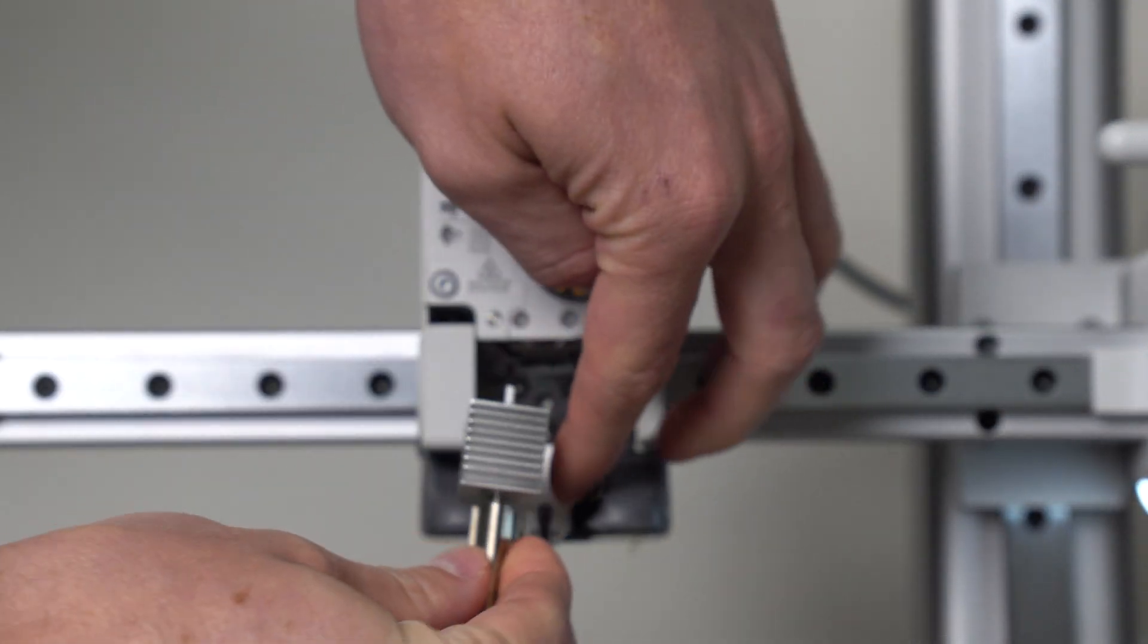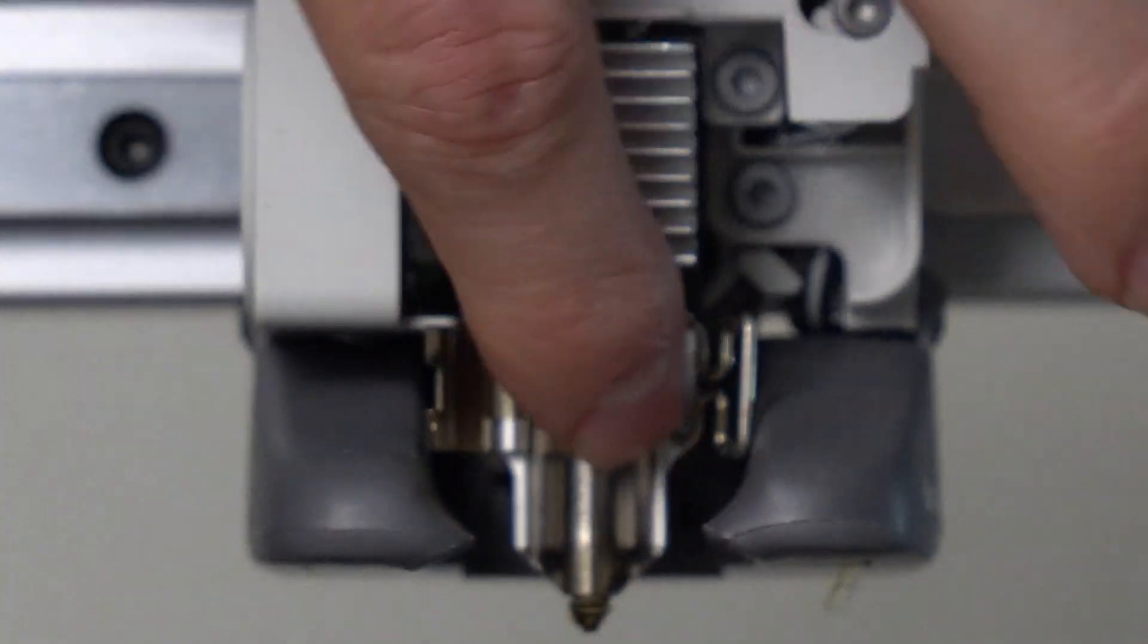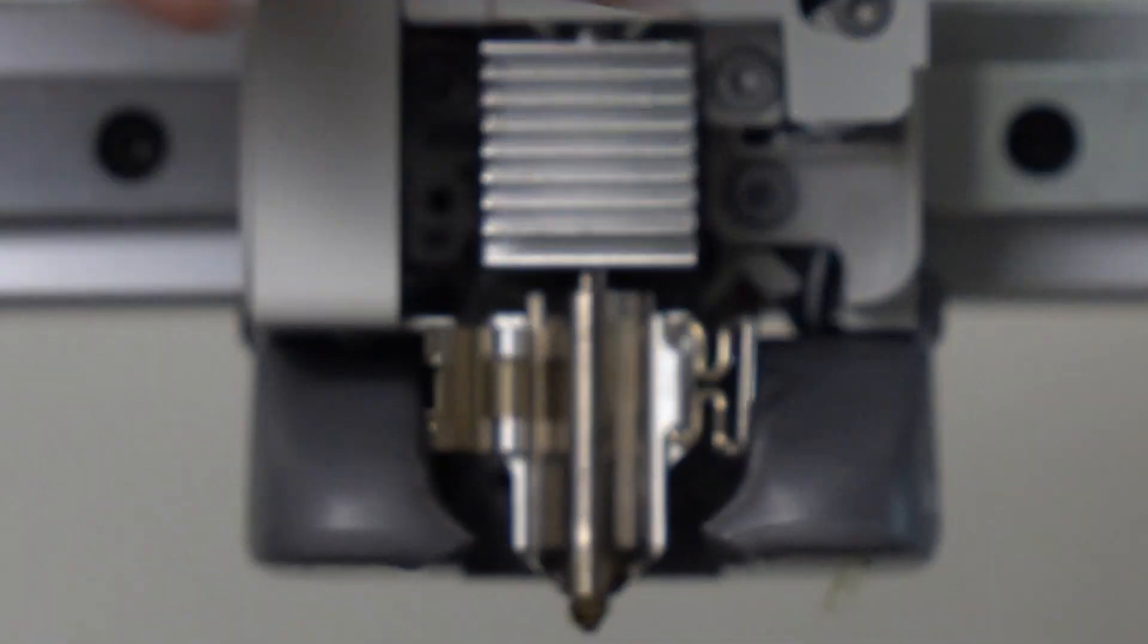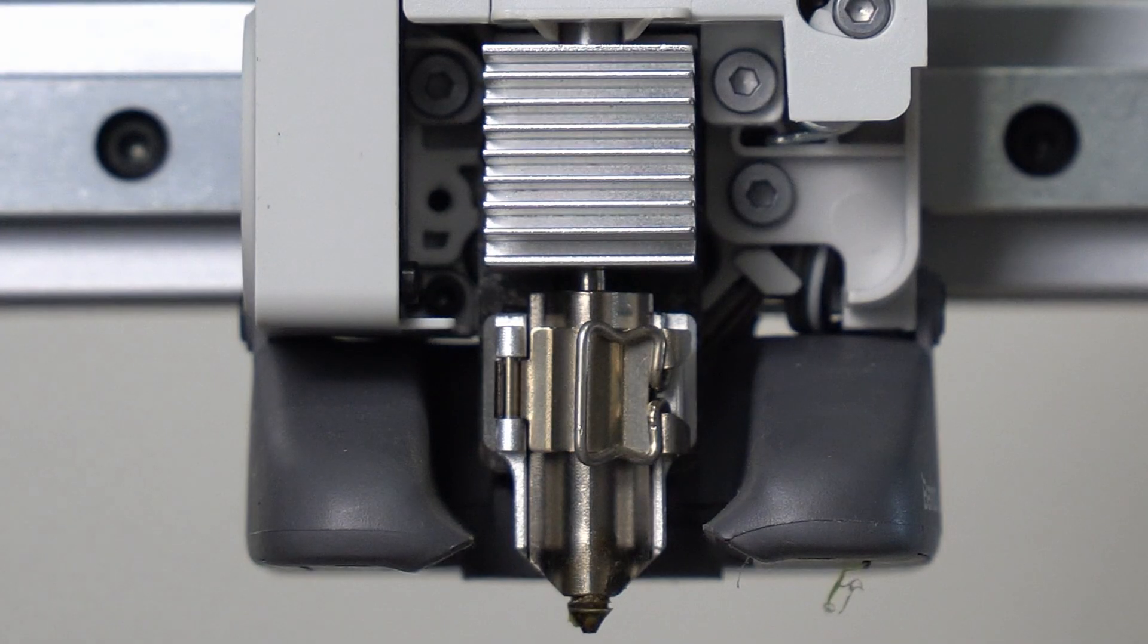The magnet on the back might try and hook onto those but basically just put it back in there. Make sure that's flush against there. Put this middle flap across. Latch it down.